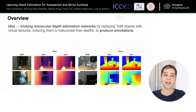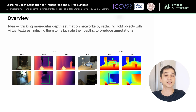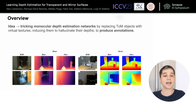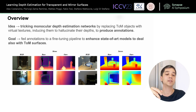Now that we've identified these challenges, let's talk about the approach. Our idea involves a simple device: we're tricking the monocular estimation network by replacing transparent and mirror objects with virtual textures. This trick allows the network to use in-depth information and essentially create annotations for us. The goal is to overcome this problem and feed the generated annotations into a fine-tuning pipeline to enhance the performance of existing state-of-the-art models, also on transparent surfaces.